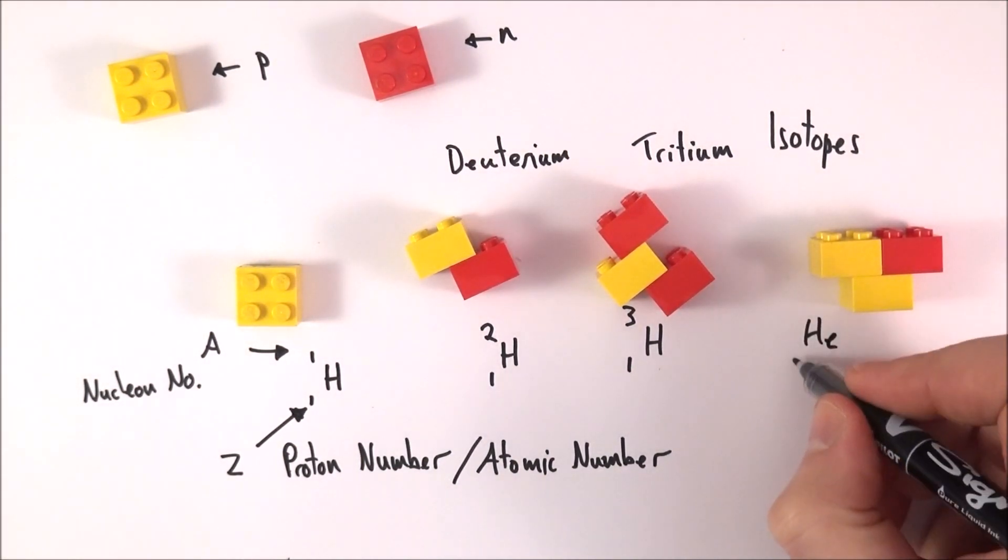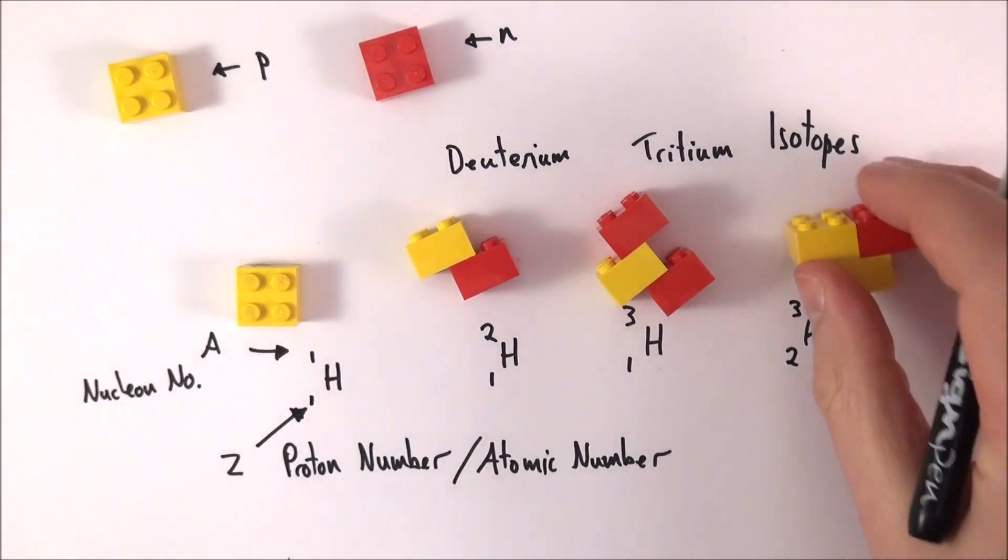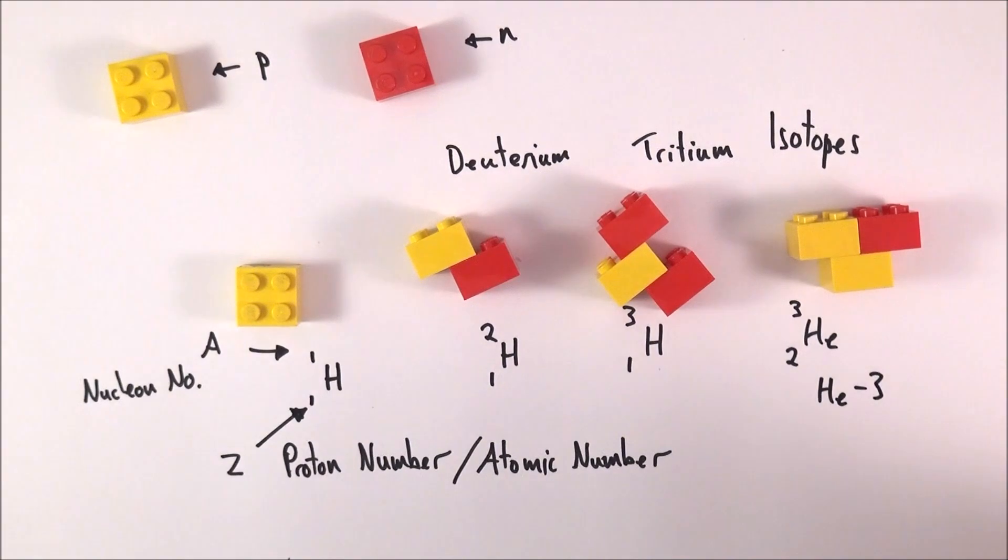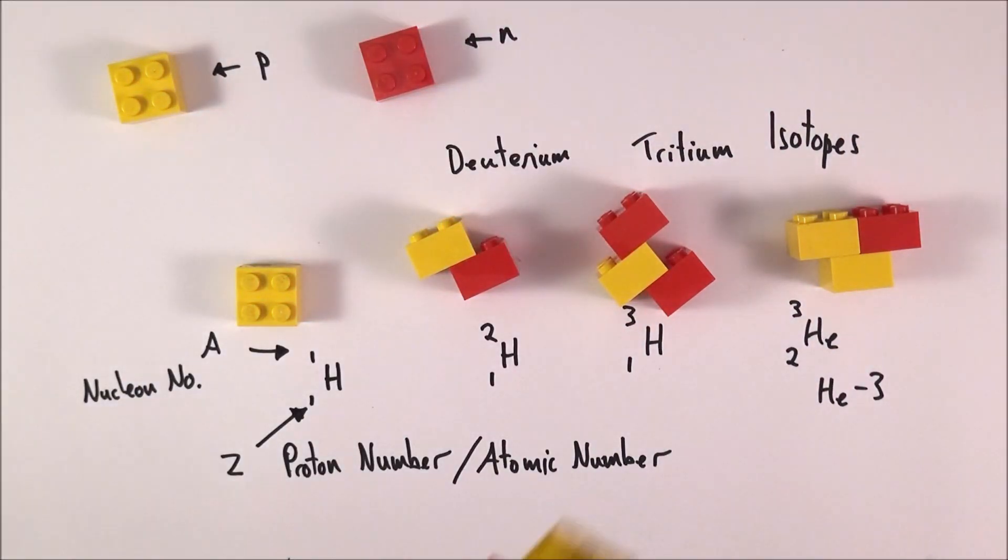What we have is something with two protons and one neutron. This is helium, and it has the numbers 2, 3. Sometimes we write different isotopes as helium-3, and that distinguishes it from the more common helium.